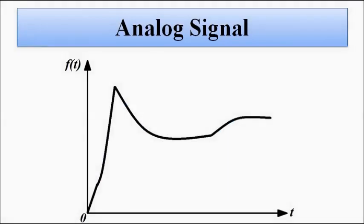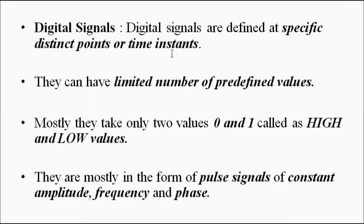Digital signals, on the other hand, are defined at specific distinct points at specific time instances. They can only have fixed values — they cannot take any value within a continuous range. When representing a digital signal, we assign two values: a logic high and a logic low, defined by zero and one. They are mostly represented as pulse signals of constant amplitude, frequency, and phase.